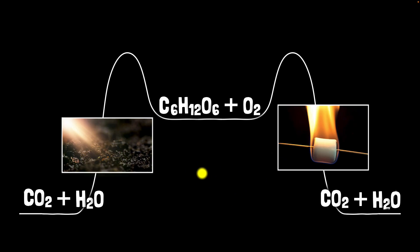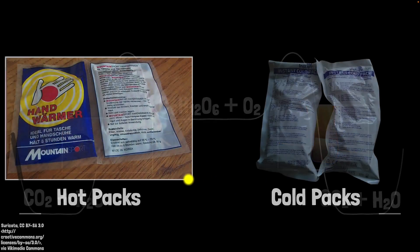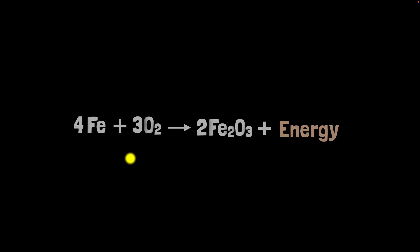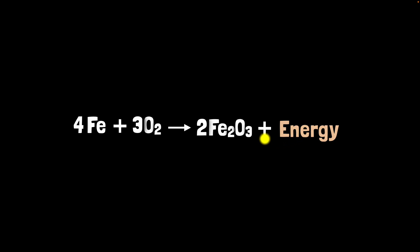Finally, let's model how this energy moves around in more detail using another example: hot packs and cold packs. Consider this reaction where iron reacts with oxygen to produce iron three oxide. It releases energy — that's why it's written as plus energy. So this is an exothermic reaction.